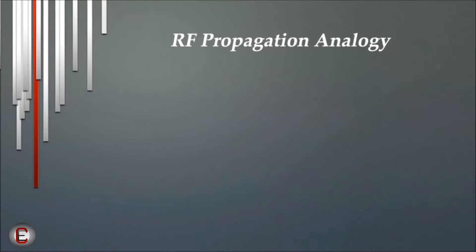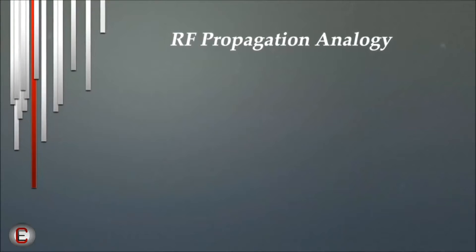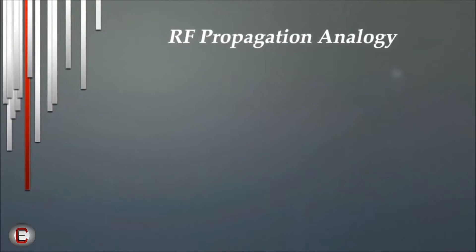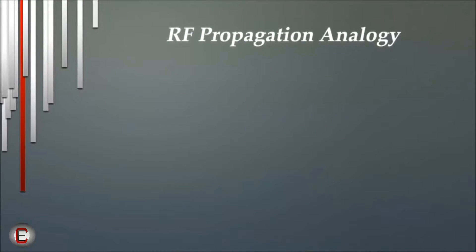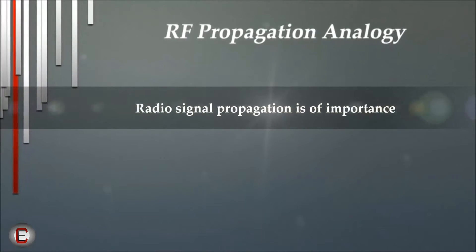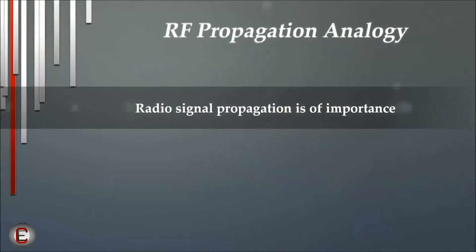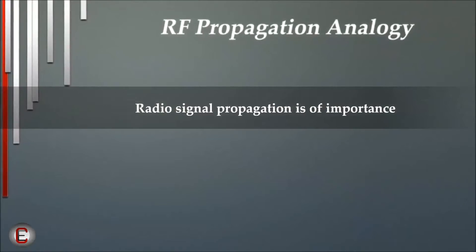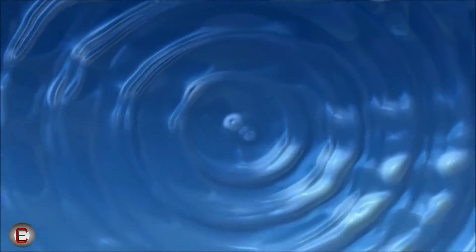Radio signals in general are affected in many ways by objects in their path and by the media through which they travel. This means that radio signal propagation is of importance to anyone designing or operating a radio system. Have you ever thrown a stone in a pond or a puddle and seen the ripples that are formed? The ripple motion is exactly how RF propagates.